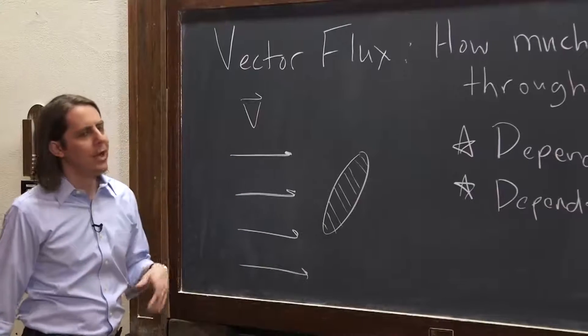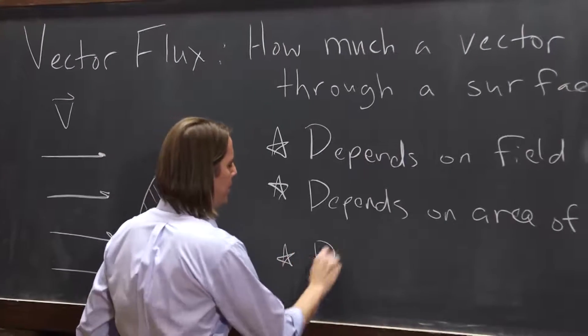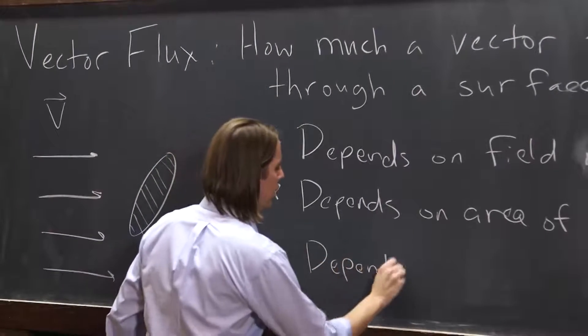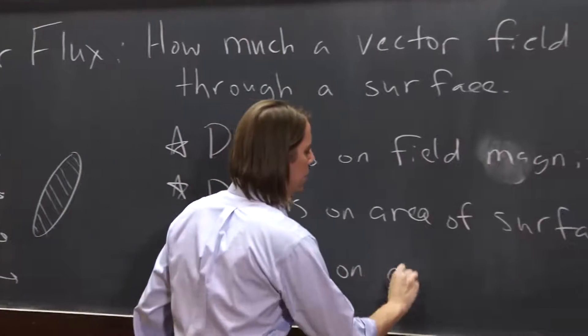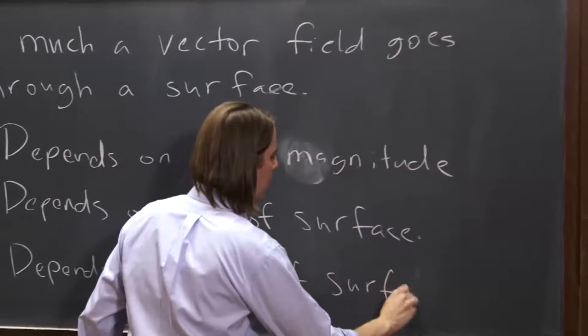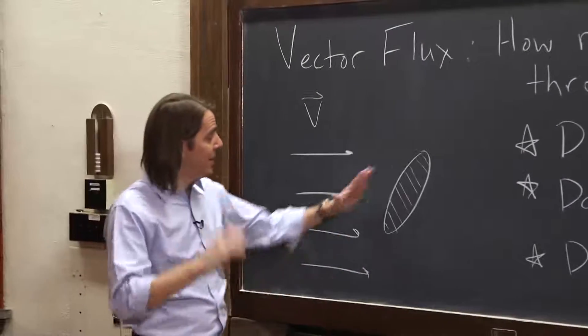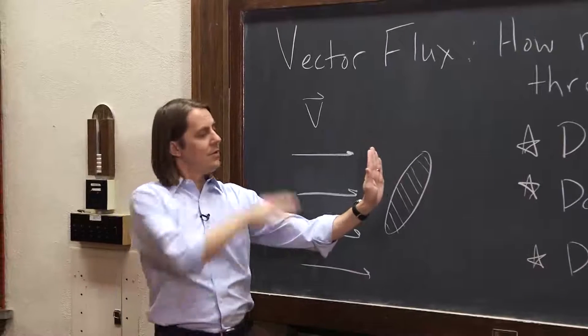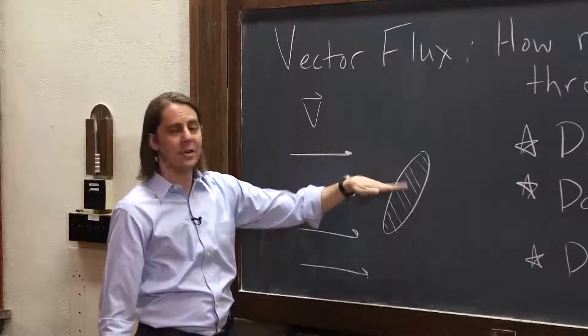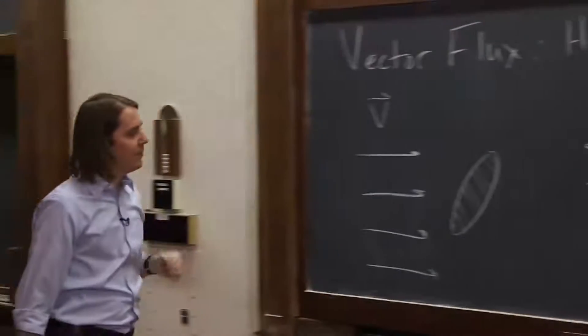It depends on this magnitude, this magnitude. But there's one more thing it depends on—it depends on the angle of the surface. So if you think about it, if this thing is sitting up like this, lots of field vectors get through. If you turn it, the amount of field going through is going to go down. So let's look at that a little bit more carefully.